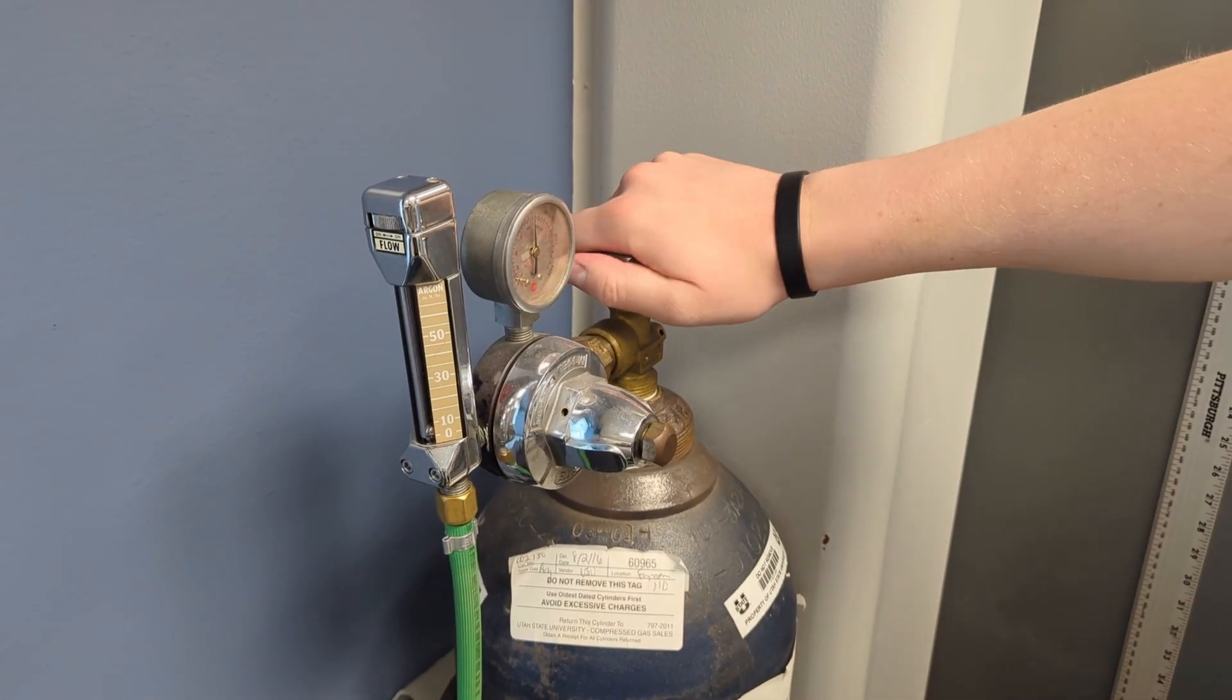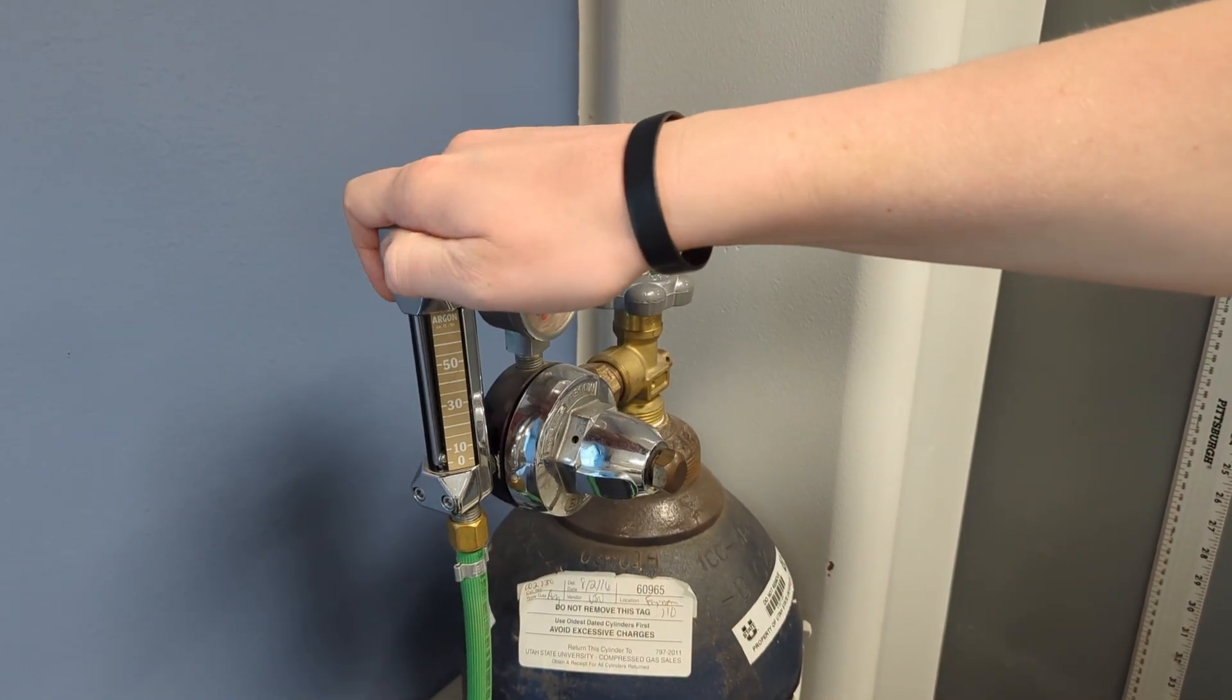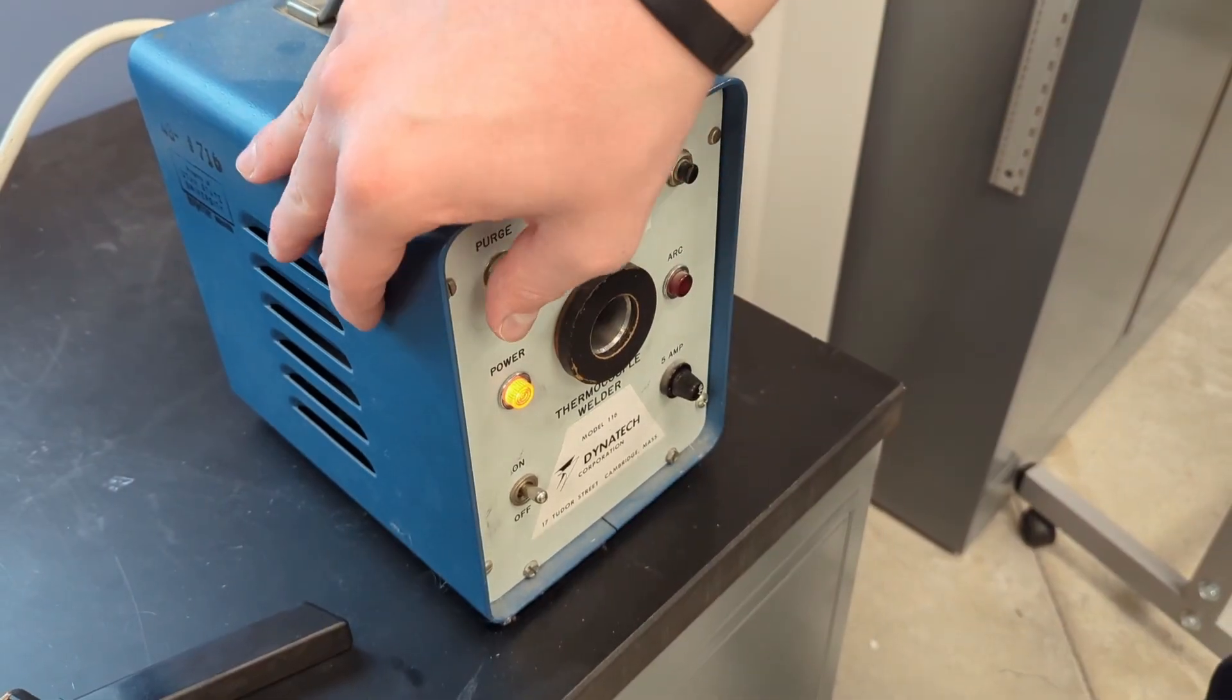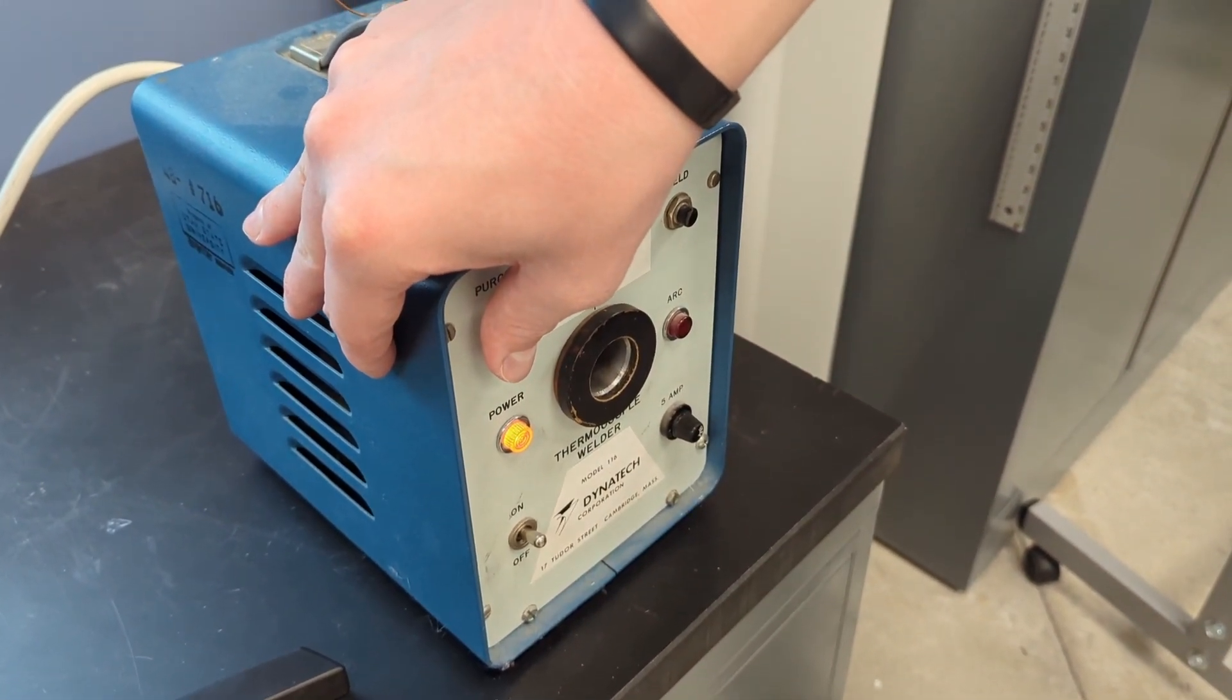After a successful weld has been performed, close the argon gas and flow control valve. Purge the excess argon gas in the line and then turn off the welder.